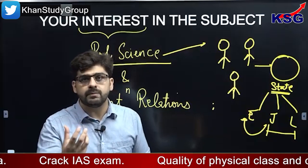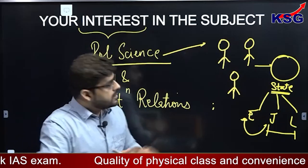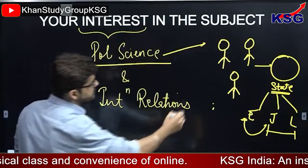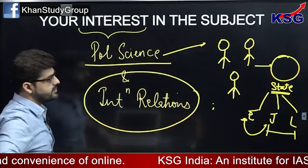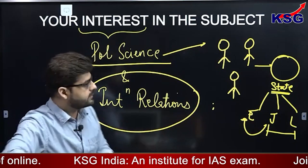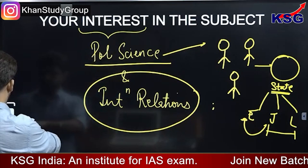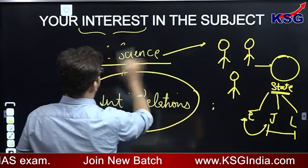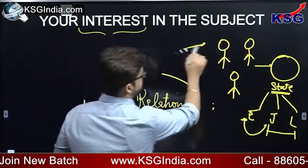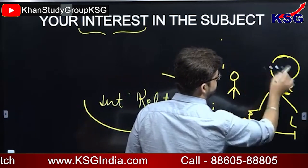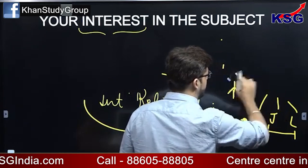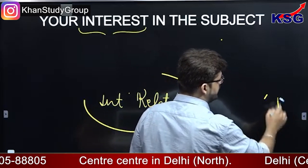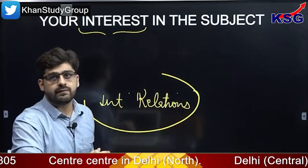Now if I take this whole discussion into the domain of the international sphere, there we have the international relations part. I have created a state — this state is in the domestic sphere. When I start the analysis between states, the analysis is taken into the arena whereby there are multiple states. Then I enter into the arena of international relations, where I have India, China, USA, and Pakistan.